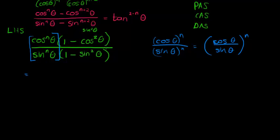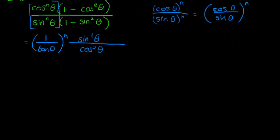This whole thing simplifies: cos over sine is 1 over tan. So this thing simplifies to 1 over tan theta to the power of n. And this side here, we see we've got sine squared theta, and at the bottom we've got cos squared theta. 1 minus sine squared theta is cos squared theta.